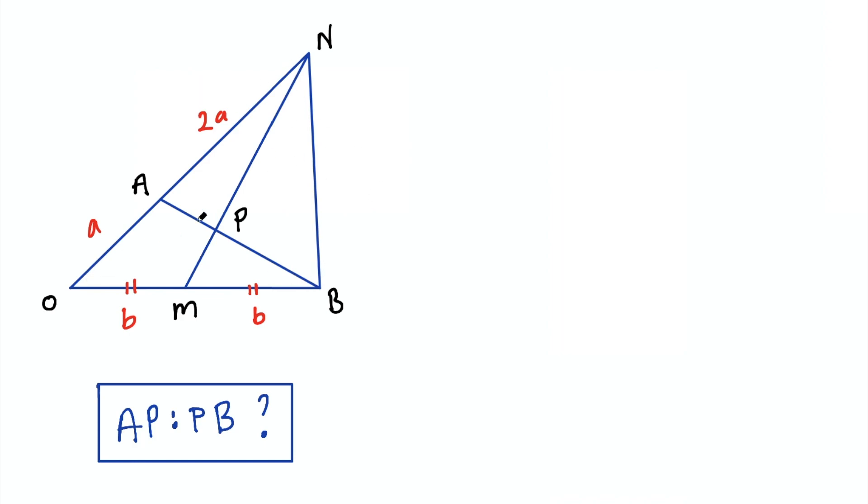So you're given this triangle ONB and you have these two lines MN and AB cutting across the triangle and you're asked for the ratio of AP to PB.